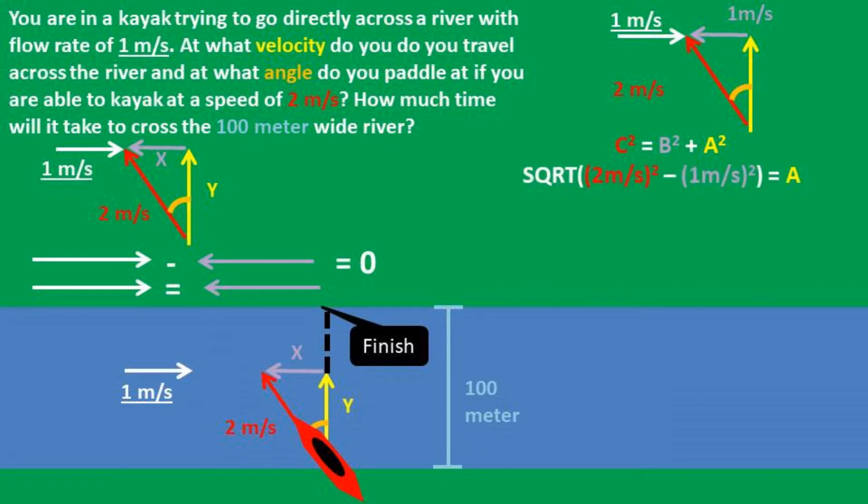Rearranging the formula and plugging in our numbers, we get that the square root of the boat's velocity of 2 meters per second squared minus the x velocity of 1 meter per second squared equals 1.73 meters per second for the velocity in the y direction.